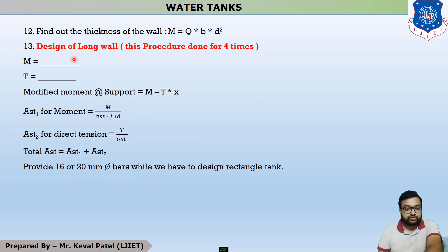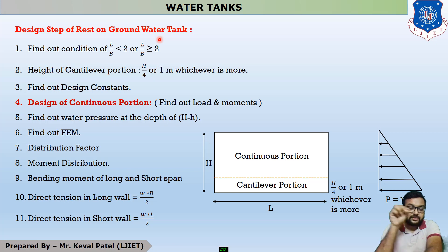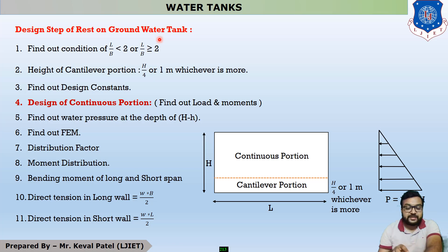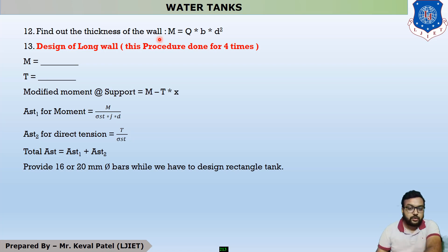The most important step is finding the thickness of the wall. There are four moments from the moment distribution table — two moments at the center and two at the junction. Using these four moments, we design the wall thickness for the maximum moment. The equation is M = Q × B × D².